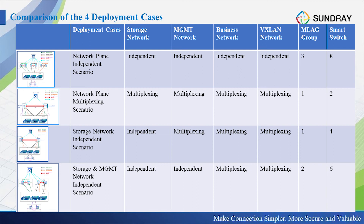For the second scenario — network plane multiplexing — we only use two smart switches and form one MLAG group. We then divide different VLANs for different networks. But all data traffic runs through the same MLAG group. So this is a multiplexing scenario, with the storage network, management network, business network, and VXLAN network all running in one MLAG group.